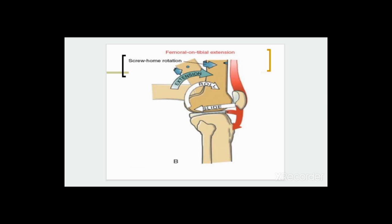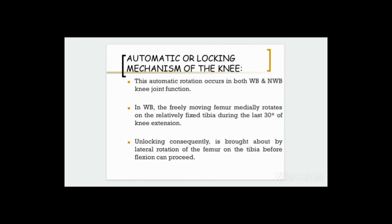In the weight-bearing position — femur moving on tibia — the rolling and gliding should be in opposite directions as per the concave-convex rule. This automatic rotation occurs in both weight-bearing and non-weight-bearing knee joint function. In weight-bearing, the freely moving femur medially rotates on the relatively fixed tibia during the last 30 degrees of knee extension. Unlocking is consequently brought about by lateral rotation of the femur on the tibia before flexion can proceed. The same mechanism occurs as in non-weight-bearing position, but with exactly opposite movements.